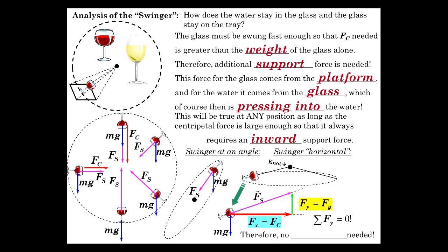And Fx is equal to Fc. Because the vertical part of the support force is what overcomes the weight, we don't need any sideways force. We don't need any friction to enable this cup to move as it does. So it all works out without any friction needed.